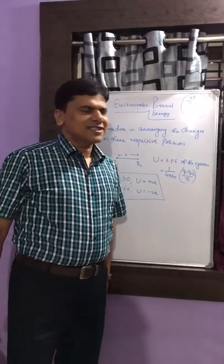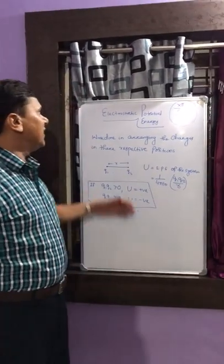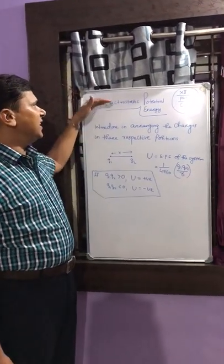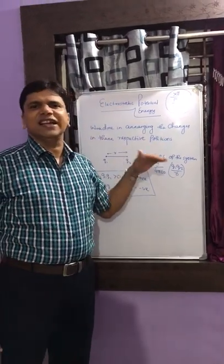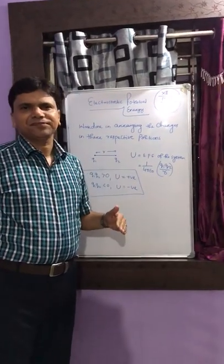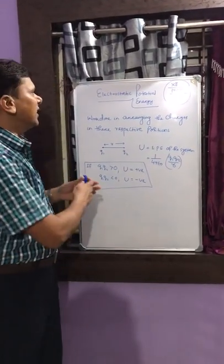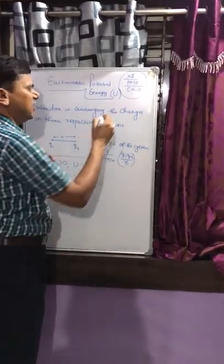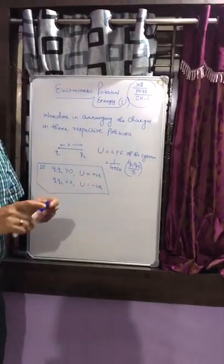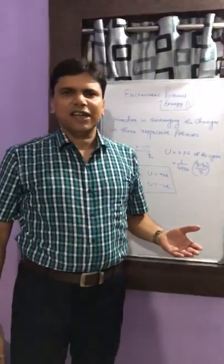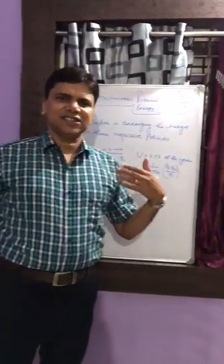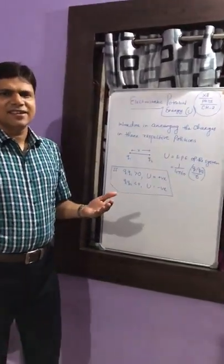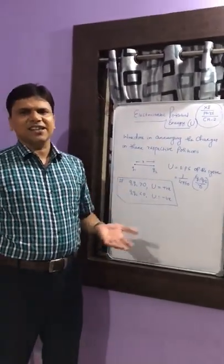Today we will discuss the topic of electrostatic potential energy, given by the symbol capital U. We have already discussed electric charge, electric field, and electric potential.